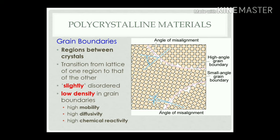Low density at grain boundaries leads to high mobility of atoms, high diffusivity, and high chemical reactivity. Each grain differs from another with respect to the number of atoms present, direction, basic structure, and the space occupied — so each grain has a different angle. This gives small-angle grain boundaries, high-angle grain boundaries, and angles of misalignment. Some defects are present in grains and grain boundaries, representing polycrystalline materials.